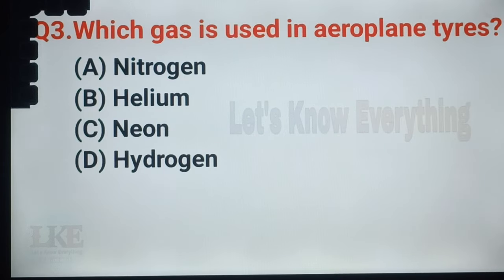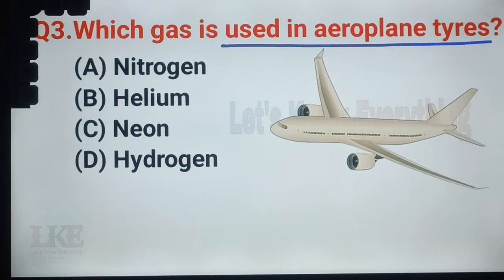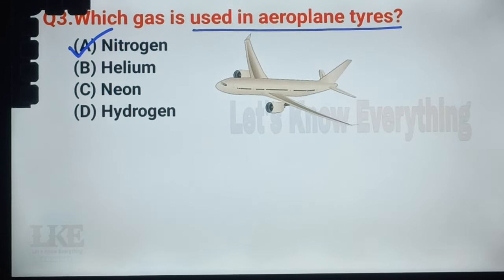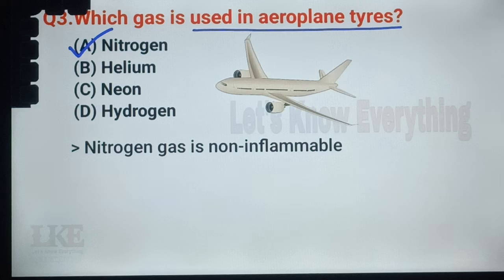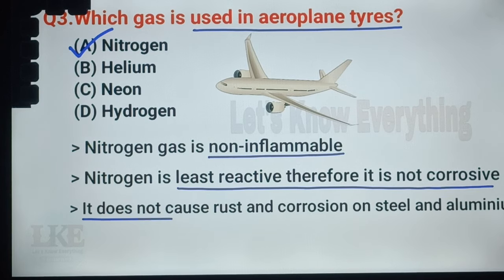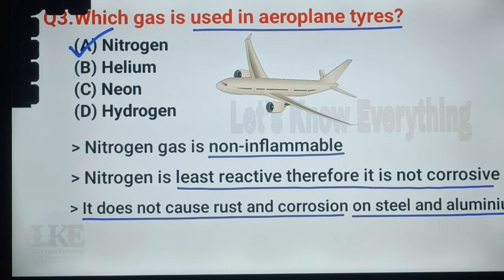Question number 22, it is very important: which gas is used in aeroplane tires? A. Nitrogen, B. Helium, C. Neon, D. Hydrogen. Right answer: option A, Nitrogen. Nitrogen gas is used in aeroplane tires because nitrogen gas is non-inflammable, least reactive, not corrosive, and does not cause rust and corrosion on steel and aluminium. For all these reasons, nitrogen gas is used in aeroplane tires.